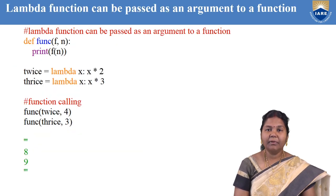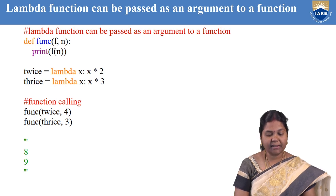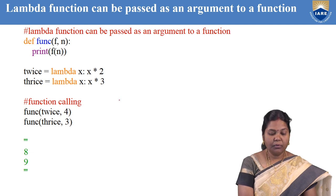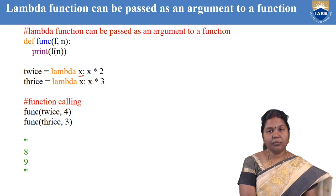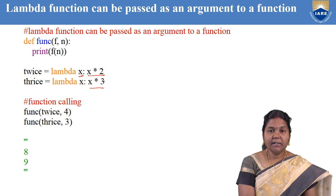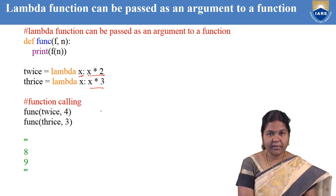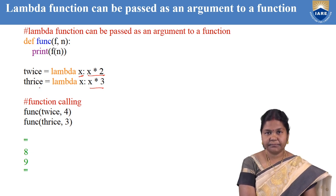Let us see another example where a lambda function can be passed as an argument to a function. Here we have defined two lambda functions to find the square of a number and the cube of a number. We have defined lambda x with expression x into 2 and lambda x with expression x into 3. These two anonymous functions are stored in variables twice and thrice — to find out twice and thrice of a number respectively.